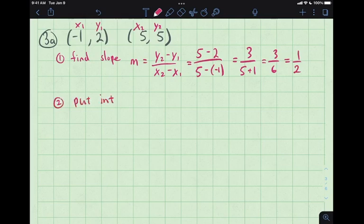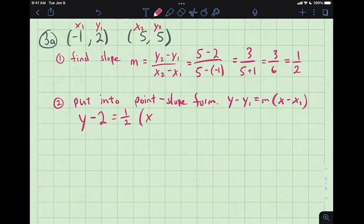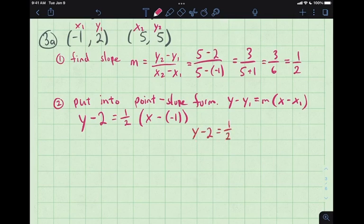Put into point-slope form. That's the only equation of a line we know as of right now. That looks like y minus y1 equals m times x minus x1. Keep the same labeling we did for the slope. Why make more work for ourselves. Y take away 2 equals 1 half times x take away negative 1.